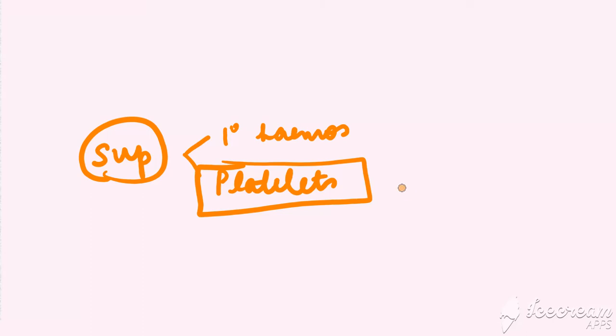To assess platelet function: first, as part of a routine CBC, you can analyze your platelet count. Then you have to look for the morphology of the platelet in a peripheral smear. Of course, you have many other tests, but bleeding time is one of the tests used to assess the function of platelets. These are the basics; you have further tests as well.